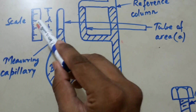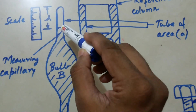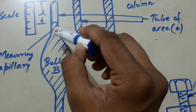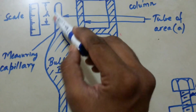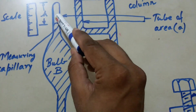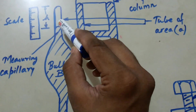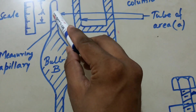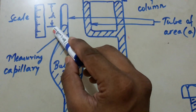The height is taken from the scale, which is the difference between the mercury level in the reference column and the mercury level in this capillary tube. As you can see, the gas is compressed here, and we know the volume of this gas because we know the area of the capillary tube and we know the height.